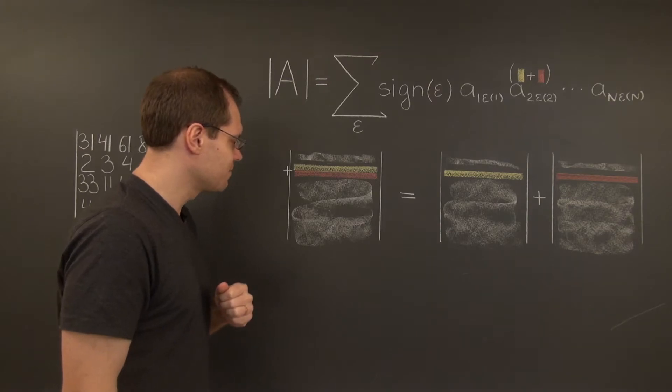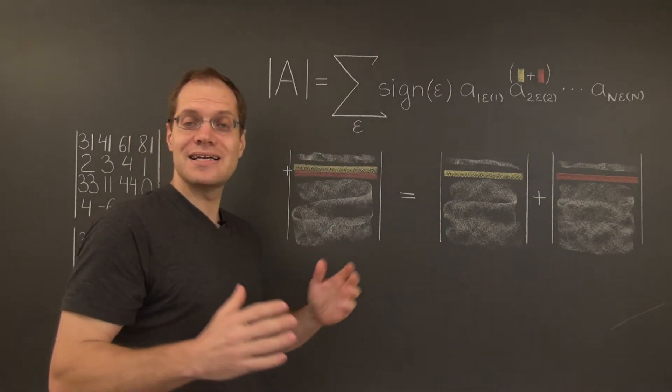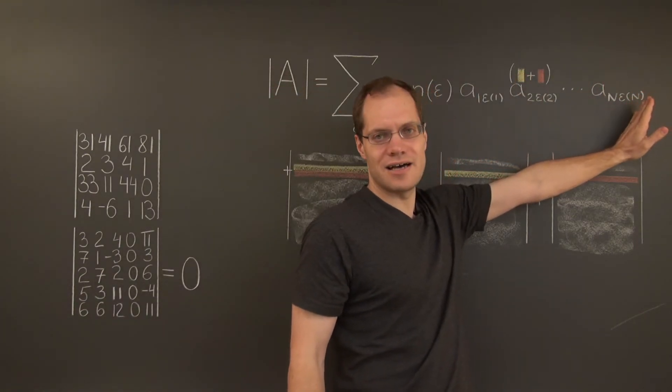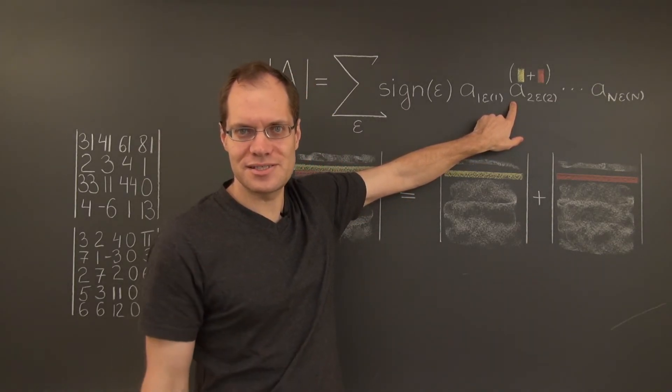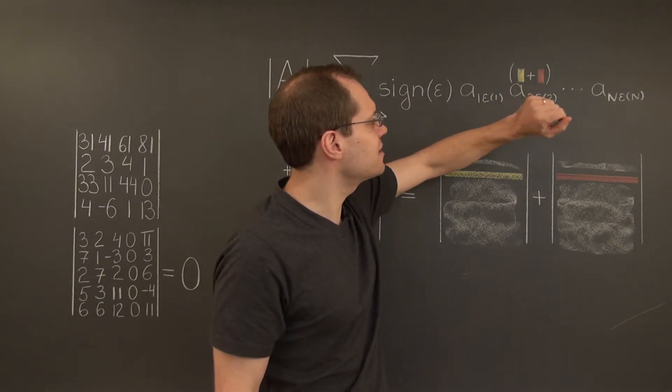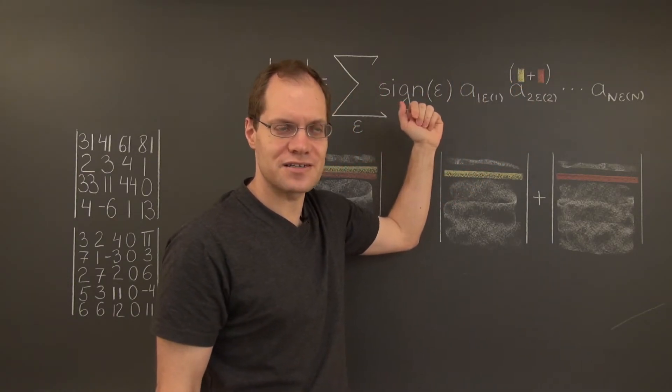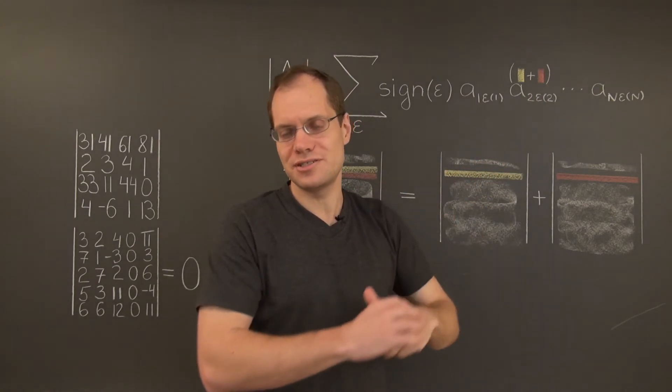And here's the gist of it. For the first part, when a row is thought of as a sum of two vectors, let's say it's the second row, then in this grand sum, in each term, the second entry corresponding to the second row will be a sum of two numbers, where the first number comes from the first vector, and the second number comes from the second vector from the right entries in those vectors.